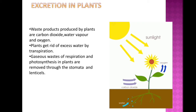Plants get rid of excess water through the process of transpiration, which is the loss of water from the plant body. Plants also release oxygen through the process of photosynthesis. The gaseous waste from respiration and photosynthesis in plants is removed through the stomata in leaves and the lenticels in the stem.